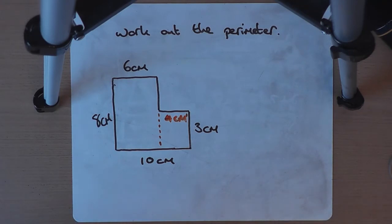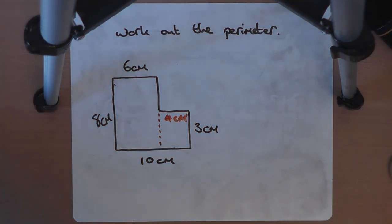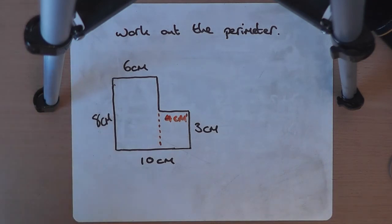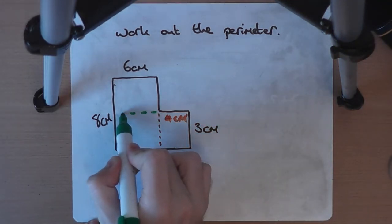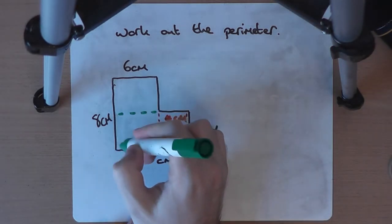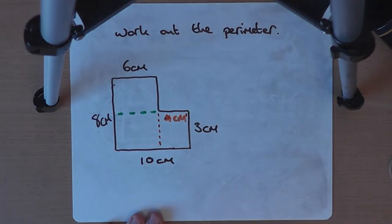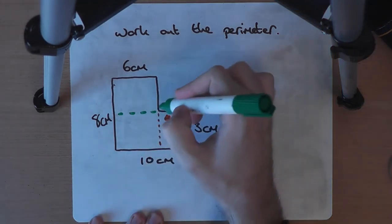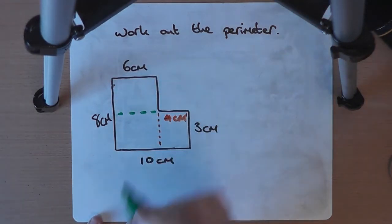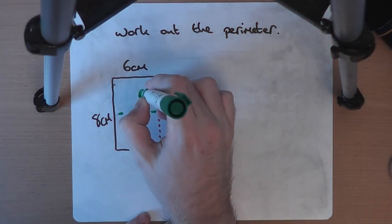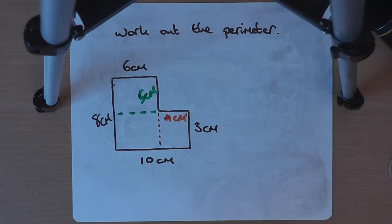We can do the same for the vertical missing edge. The height of the whole shape is 8 centimeters. And if I just draw a dashed line across from there, up to this point here, we have covered 3 centimeters out of the 8. Which means this bit here, we need to cover the rest of the 8 after the 3. How much more than 3 is 8? Well, 5 centimeters, which means that this edge here is 5 centimeters in length. And suddenly, we fill in the two missing sides.